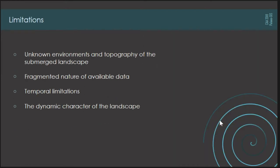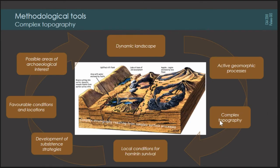There are important limitations: the environments and topography of these now-submerged landscapes are mostly unknown. Specifically for the Aegean, we have problematic material due to the fragmented nature of available data in archaeology, paleoanthropology, paleoenvironments, and paleo-topography. We also have temporal limitations, with the vast majority of data going as far back as the Last Glacial Maximum and not often beyond that, and of course the dynamic character of the landscape itself, which is still changing. Because of these inherent limitations, we selected methodologies that mostly rely on current data sets — specifically the complex topography concept as introduced by Bailey and King.